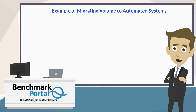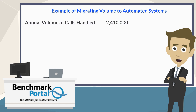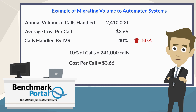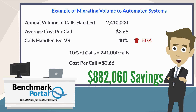Let's consider a simple example. Say you have a total annual volume of calls handled by your dedicated phone agents of 2,410,000 and an average cost per agent-handled call of $3.66. Imagine you are currently handling 40% of calls in the IVR and want to increase that to 50%, a change of 10% of your call volume. If you are able to improve your IVR functionality and cause an additional 10% of call volume to resolve successfully in the IVR, the math would look as follows: 10% of calls equals 241,000 calls; cost per call is $3.66; savings on agent-handled calls would be just over $882,000. Most IVR improvement costs and operating costs are fairly modest, which would provide you with an excellent ROI for your efforts.